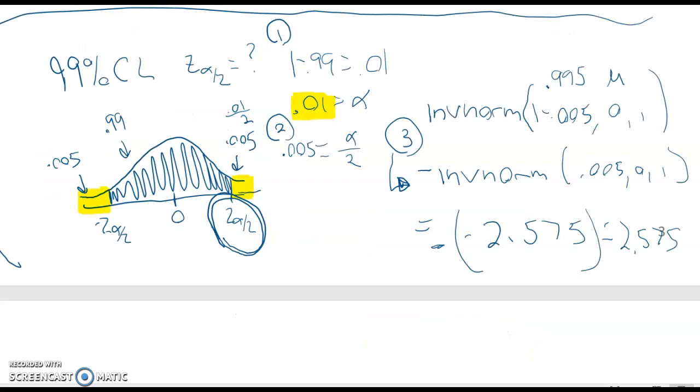For any students wondering how that critical value for the 99 percent confidence level was calculated first you can draw a diagram as you see here I have the 99 percent part shaded and then I have 0.005 on either side.